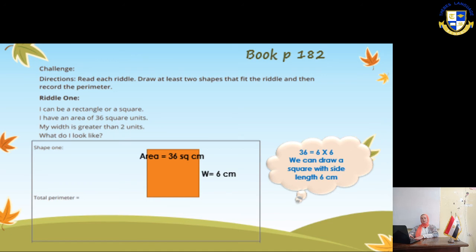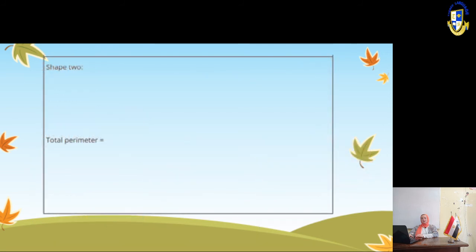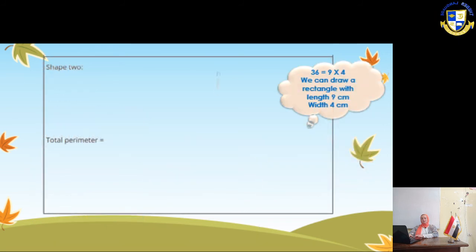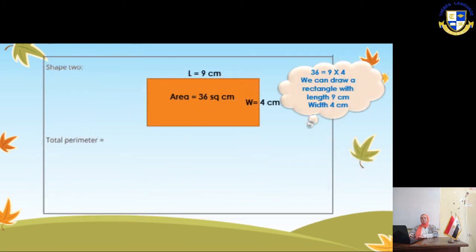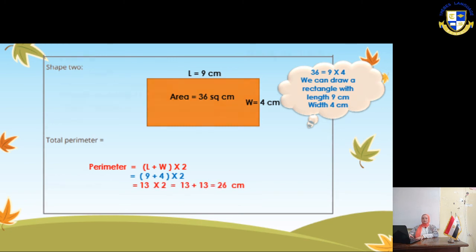Shape number 2: we are going to draw a rectangle. The area means side by side, so we can say 9 × 4 = 36. So the length will be 9 and the width will be 4. The perimeter will be (9 + 4) × 2 = 26 cm.